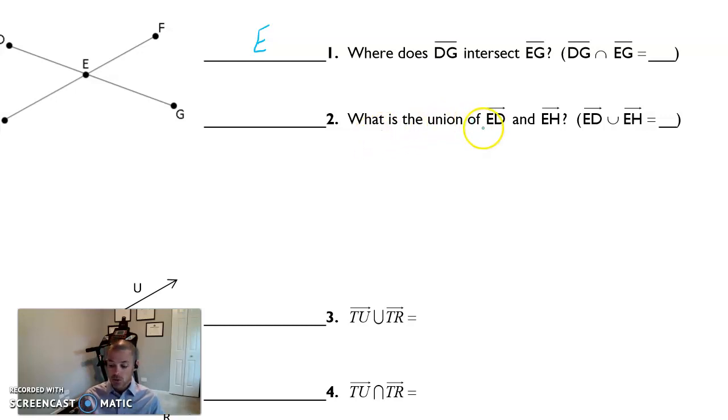Next, what is the union of ray ED and ray EH? I know it's a ray because of the line segment above with one arrow. And when we do it that way, it means it starts here at E. E is listed first as a very specific reason. So it starts at E and it goes in the direction of D forever. That's what a ray does. So that's this ray ED. And ray EH also starts at E and it goes forever in the direction of H. So now that's this ray here.